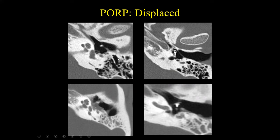These are examples of PORPs that have been displaced. In the top left we can see the stapes and the head of the malleus, but the prosthesis that was intended to go from the tympanic membrane to the head of the stapes is unfortunately displaced. Here's another example: the patient underwent resection for cholesteatoma, we can see the stapes and the malleus, but the prosthesis should be oriented to attach to the head of the stapes and we can see it has been displaced. These are two examples of displaced partial ossicular prostheses.